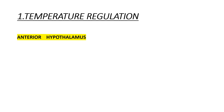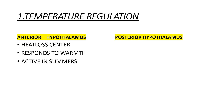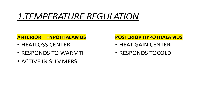Moving on to our first function: temperature regulation. The anterior hypothalamus is the heat loss center — it responds to warmth and is active during summers. The posterior hypothalamus is the heat gain center — it responds to cold and is active in winters.